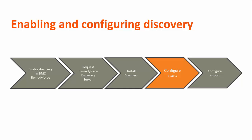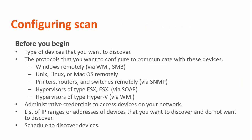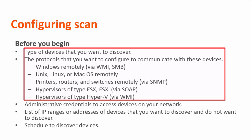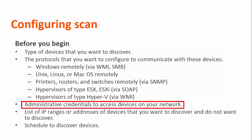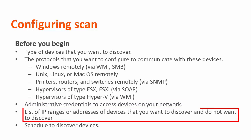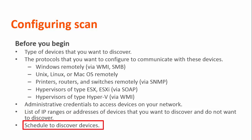Now let's configure what and when the scanner should scan. Before you configure scans for a scanner, identify the devices and device types that you want to discover. Next, identify and collect the credentials that are required to access the devices. Ensure that the credentials you collect have administrator access to the devices. You also need the IP addresses of the devices that you want to discover and do not want to discover. Finally, decide at what time you want the scanner to scan your network.